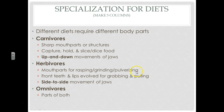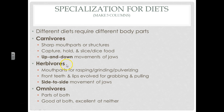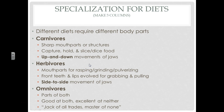And then there's omnivores, which of course is us, and they kind of have parts of both. We are good at both eating meat and plants, but we're not excellent at either one. We're not as good at eating meat as carnivores, and we're not as good at eating plants as herbivores. There's an old phrase for this: jack of all trades, master of none. We're good at everything but great at nothing. But this does give us more flexibility in what we eat.